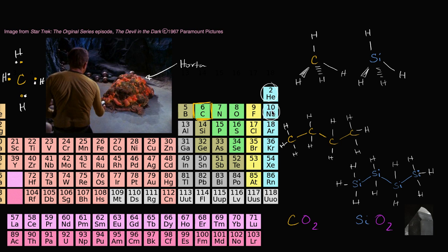Neon has two in its inner shell, eight in its outer shell. You might remember the octet rule that atoms try to get to eight or pretend like they have eight electrons in their outer shell to feel stable. And here, carbon is sharing eight electrons. It contributed four, and then the four hydrogens contributed four, and it forms methane.